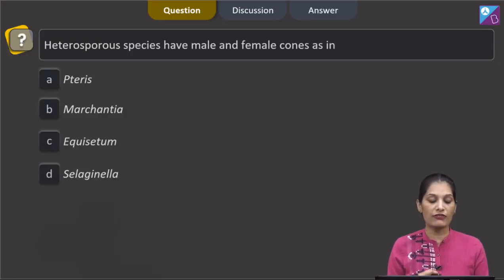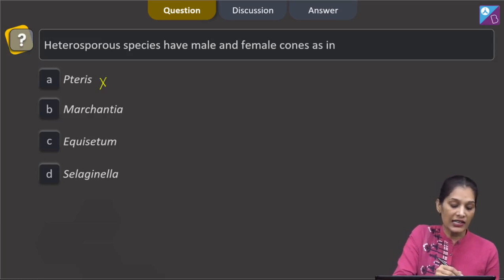Heterosporous species have male and female cones as in - first you have to find out the heterosporous species. Pteris is homosporous, Equisetum is homosporous.